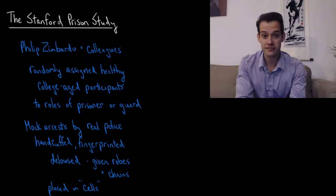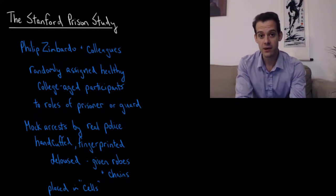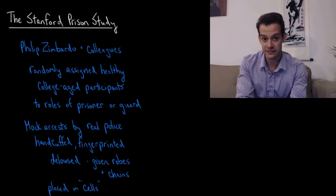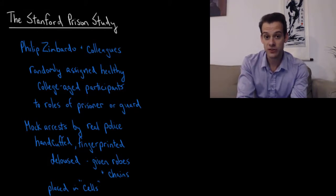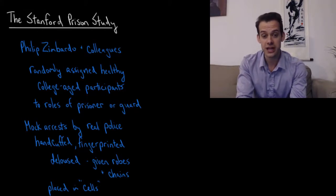Now those who were assigned to be prisoners experienced mock arrests conducted by real police officers who handcuffed them, blindfolded them, put them in the back of real police cars, and then brought them to the psychology building at Stanford, where they were fingerprinted, given a fake de-lousing, and then given short robes to wear as well as small ankle chains to remind them of their status as prisoners.